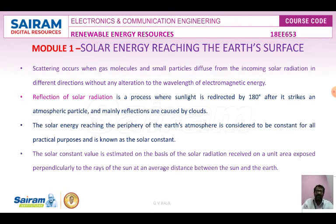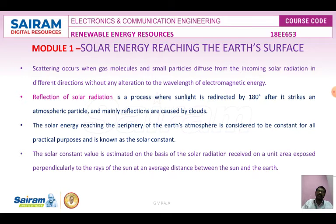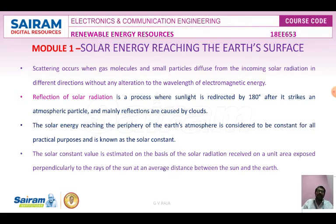Scattering happens without any alteration of the wavelength of the electromagnetic energy. Reflection of radiation is the process where sunlight is redirected by 180 degrees after it strikes an atmospheric particle. The radiation intensity on the surface of the Sun is approximately 6.33 × 10⁷ W/m².